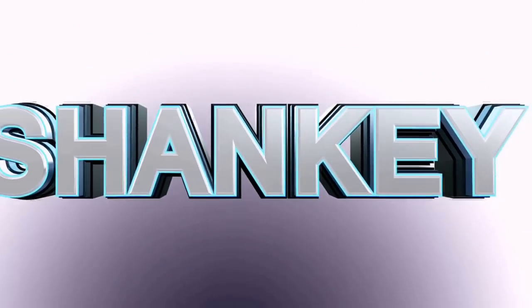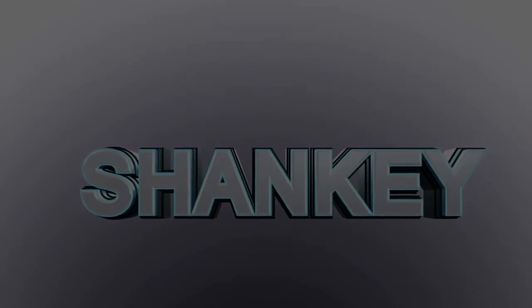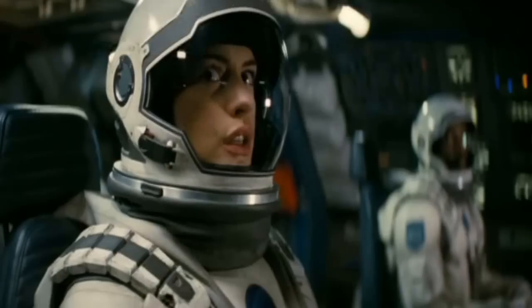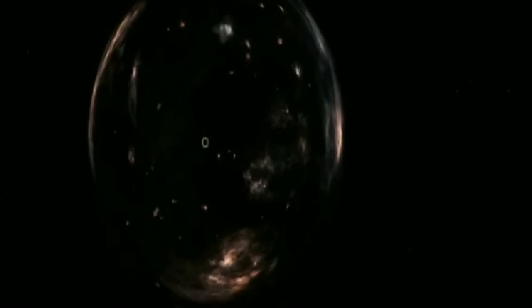The planet HIP 116454b is a super earth with a diameter 2.5 times the diameter of earth. It orbits a star a little cooler and smaller than our sun, located in the Pisces constellation. The planet is too close to its star to support life.